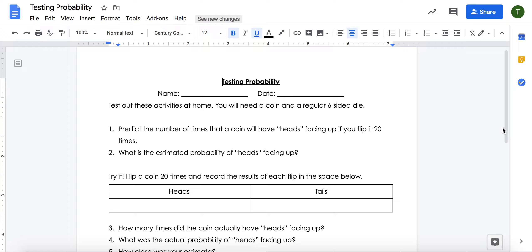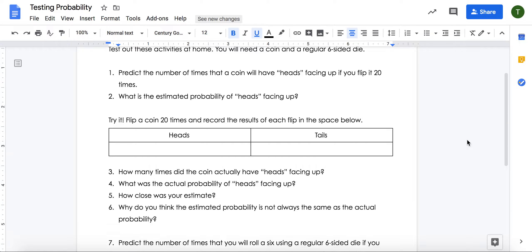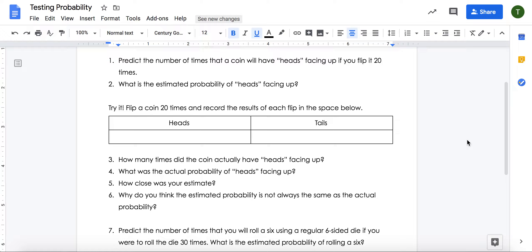Question three then asks you to summarize your results. How many times did the coin actually have heads facing up? What was the actual probability of heads facing up? So remember, theoretical or estimated probability is what we predict will happen in a probability scenario. The actual probability will still be a fraction, but this time it's going to be a fraction of the number of times it actually was facing up out of the total number of times you flipped.